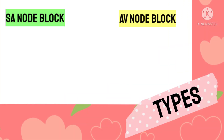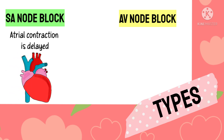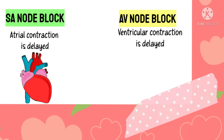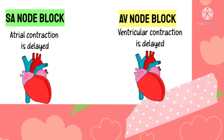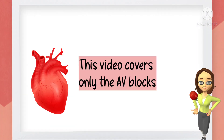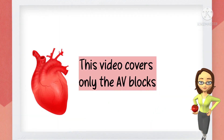Coming to the types of heart block, we have the SA node block and the AV node block. In SA node block, the atrial contraction is delayed as the electrical impulses fail to reach the atria. In AV node block, the ventricular contraction is delayed as the electrical impulses fail to reach the bundle of His or Purkinje fibres. In this video, our focus will be mainly on the AV blocks, which are the commonest type of heart block with severe complications if not treated.